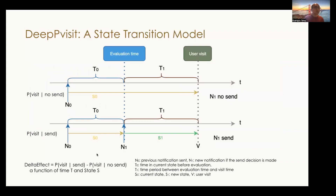To address these challenges and better model the notification events, we adopt a notification state transition framework. In this framework, there are two cases. The first case: when the mobile notification system decides not to send notifications, the user will continue to stay in the current state.